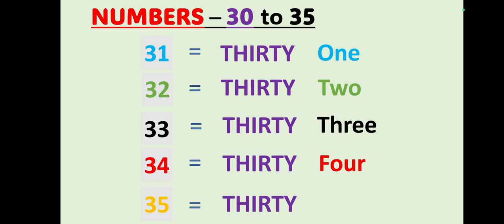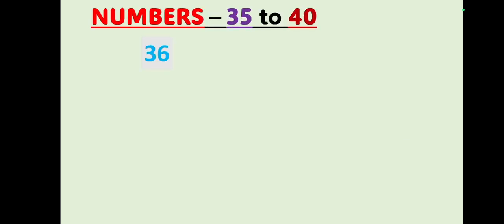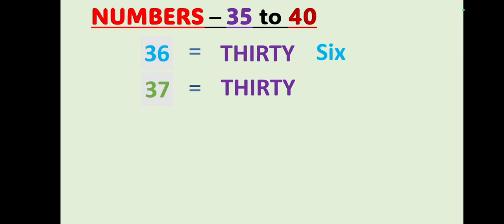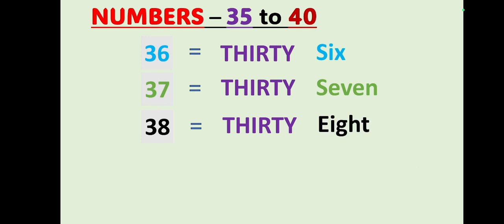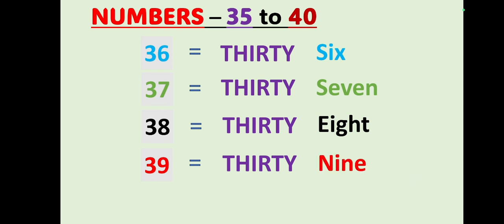Number 34 — T H I R T Y, 30, F O U R, 4 — 34. Number 35 — T H I R T Y, 30, F I V E, 5 — 35. Number 36 — T H I R T Y, 30, S I X, 6 — 36. Number 37 — T H I R T Y, 30, S E V E N, 7 — 37. Number 38 — T H I R T Y, 30, E I G H T, 8 — 38. Number 39 — T H I R T Y, 30, N I N E, 9 — 39.